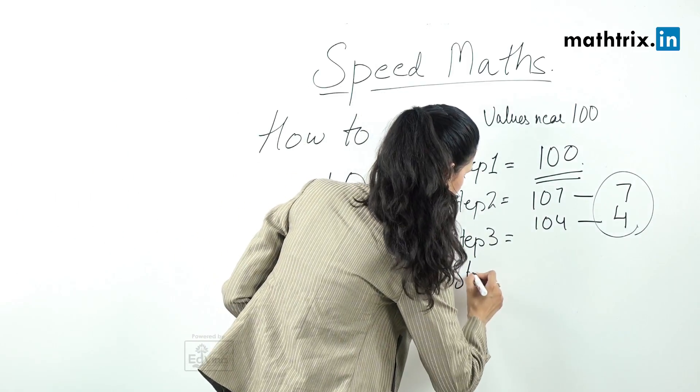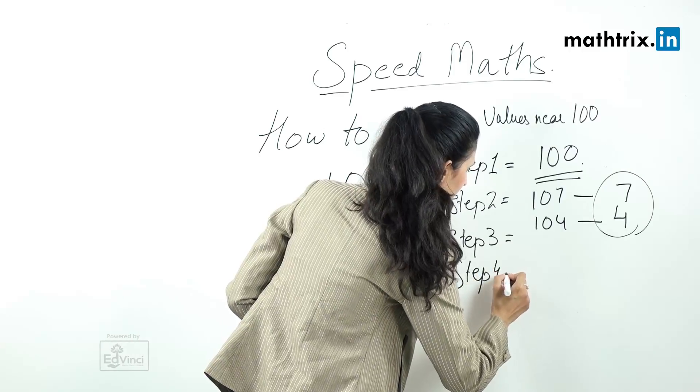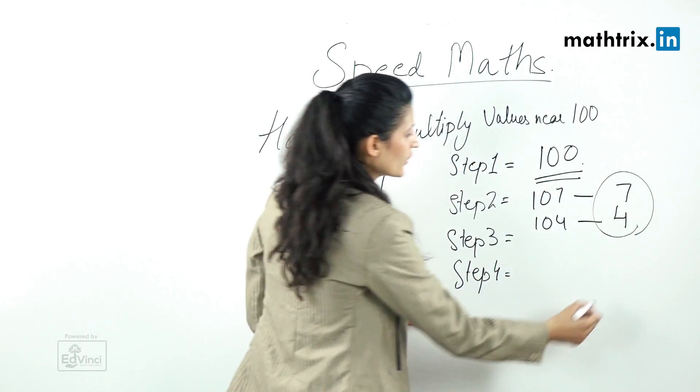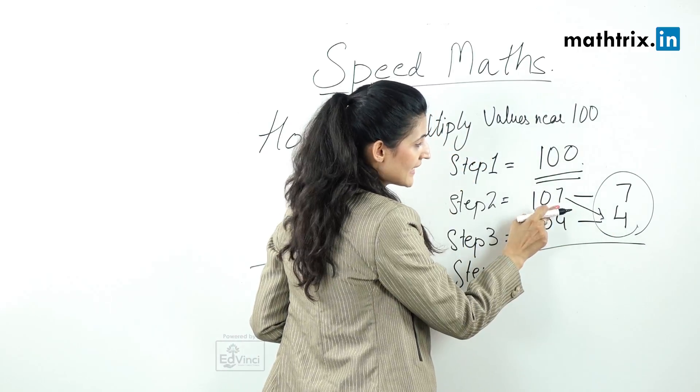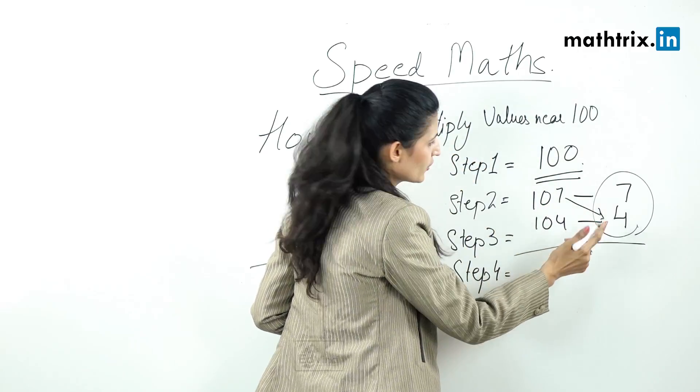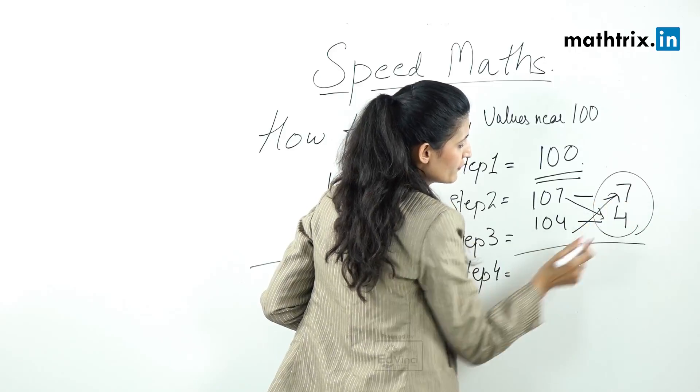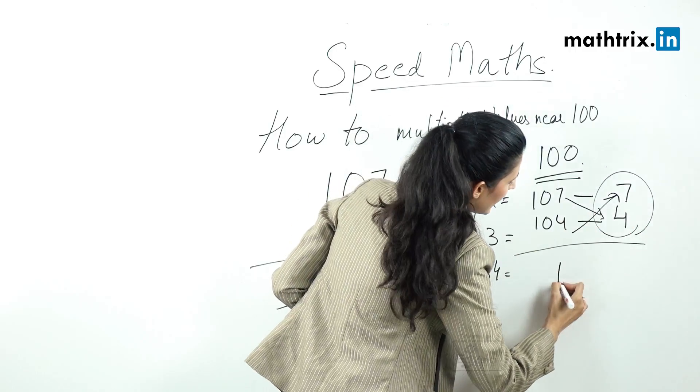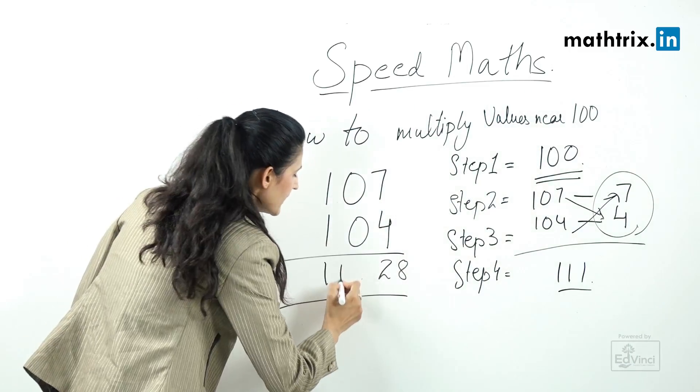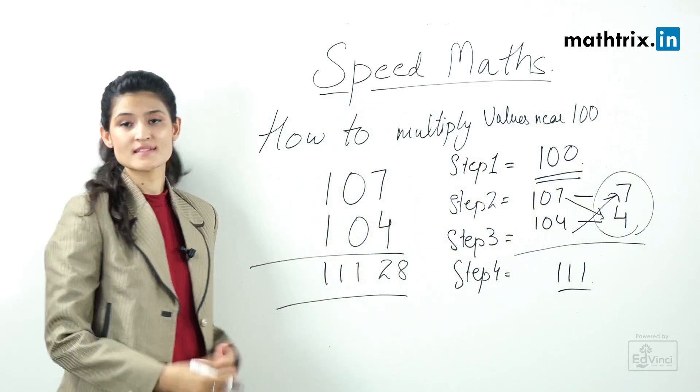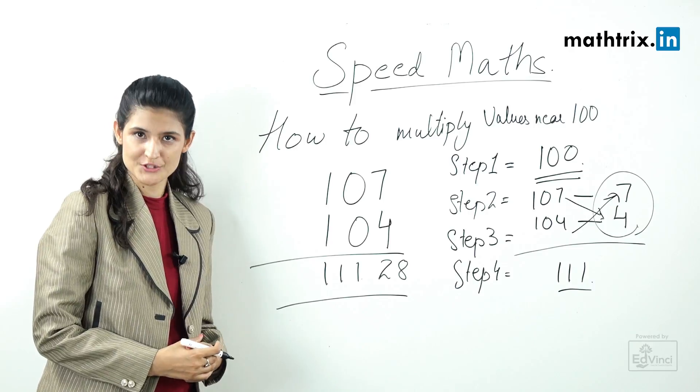Moving on to step number 4. You have to do the cross addition. You can either add 107 plus 4 or do 104 plus 7 and you will get 111. Our answer is 11128.